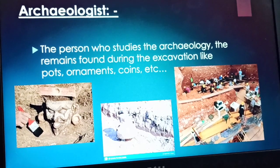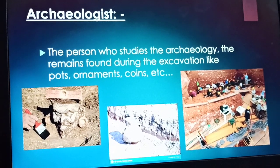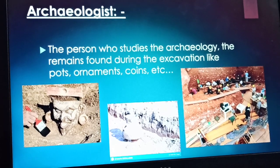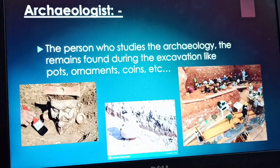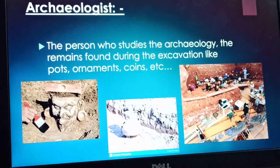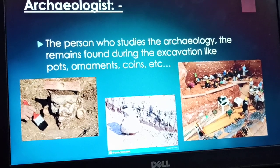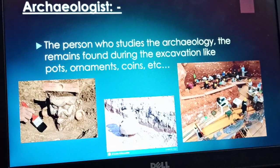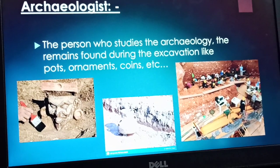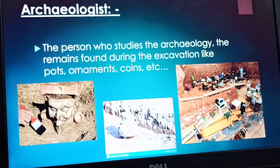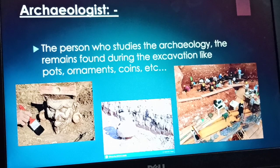Now, we can see things like a statue or a pot. These will be made by humans with their hands. The articles made by humans are called artifacts. Human-made objects found from any site are called artifacts.